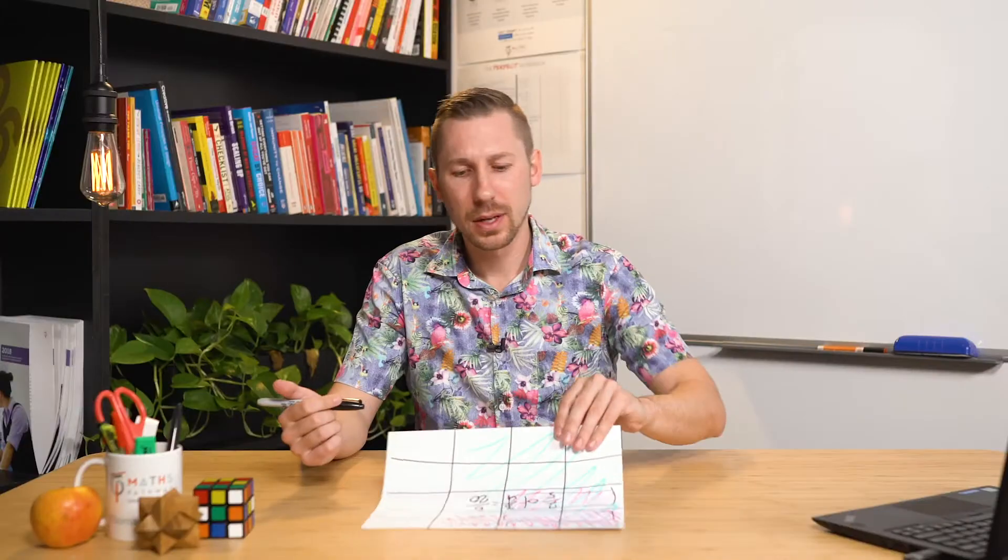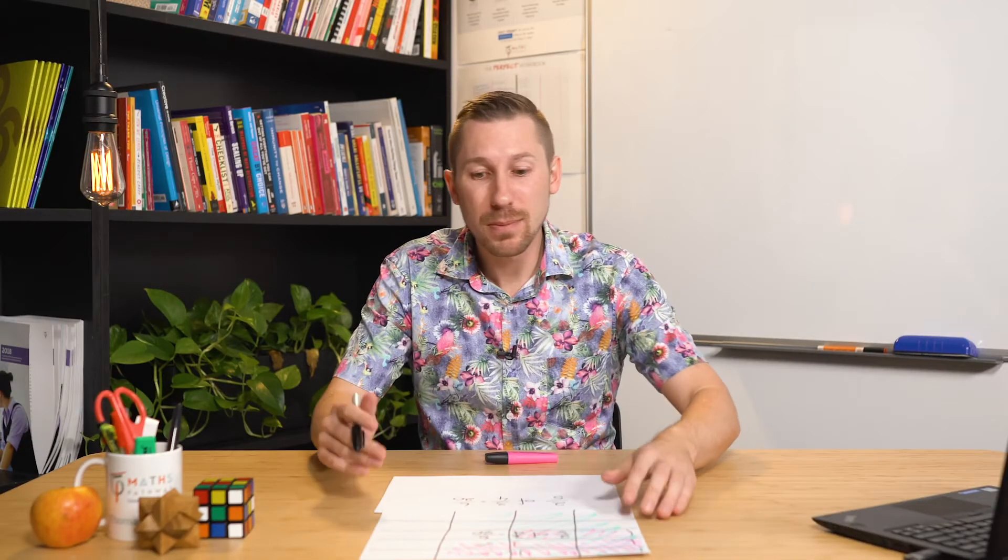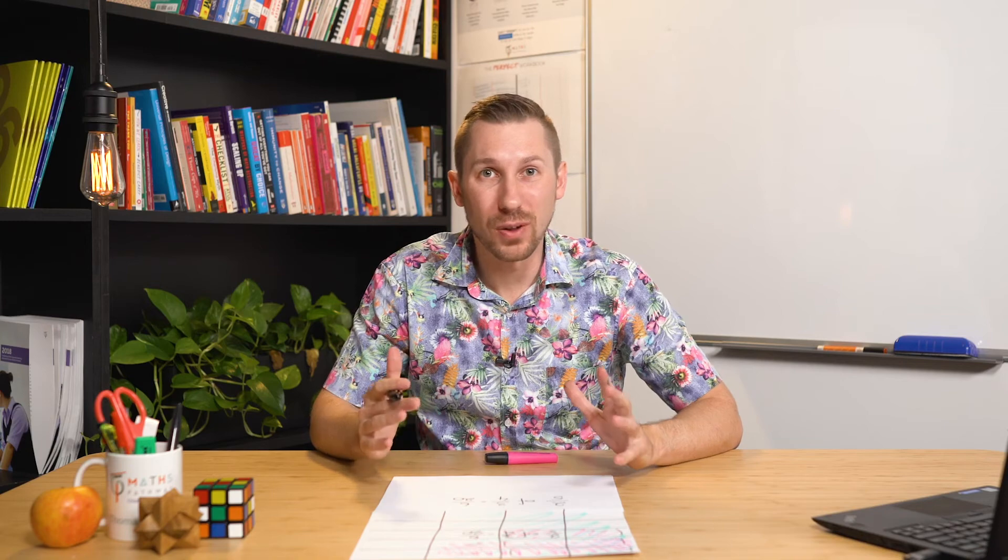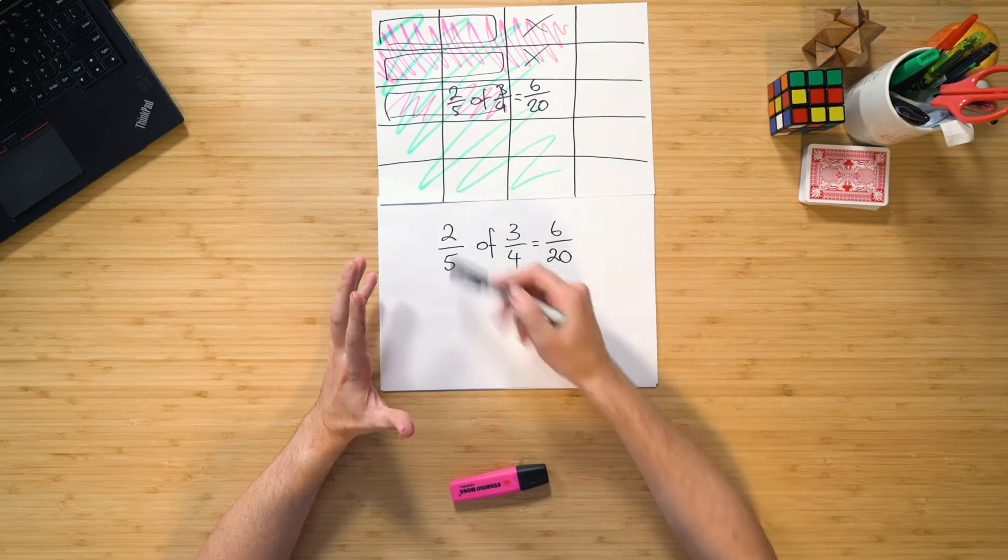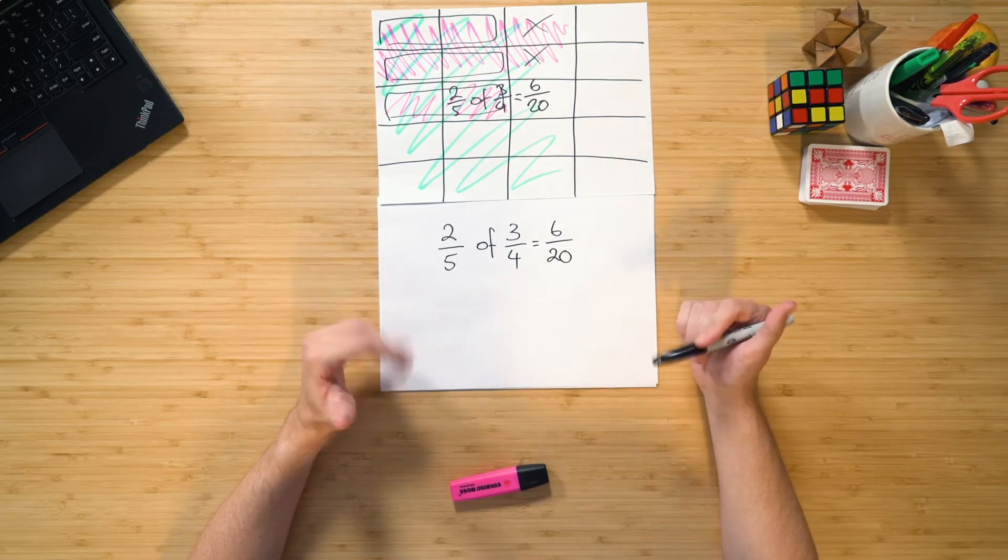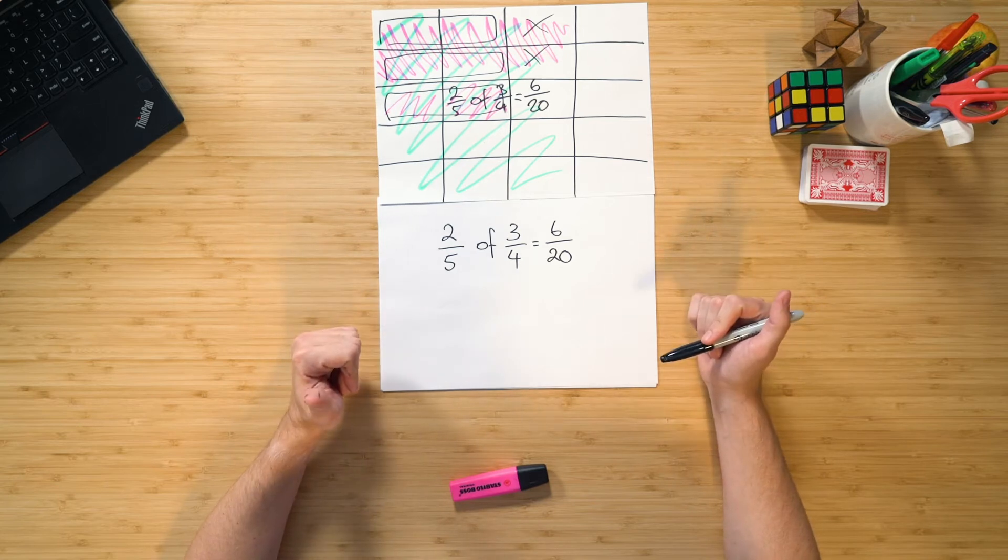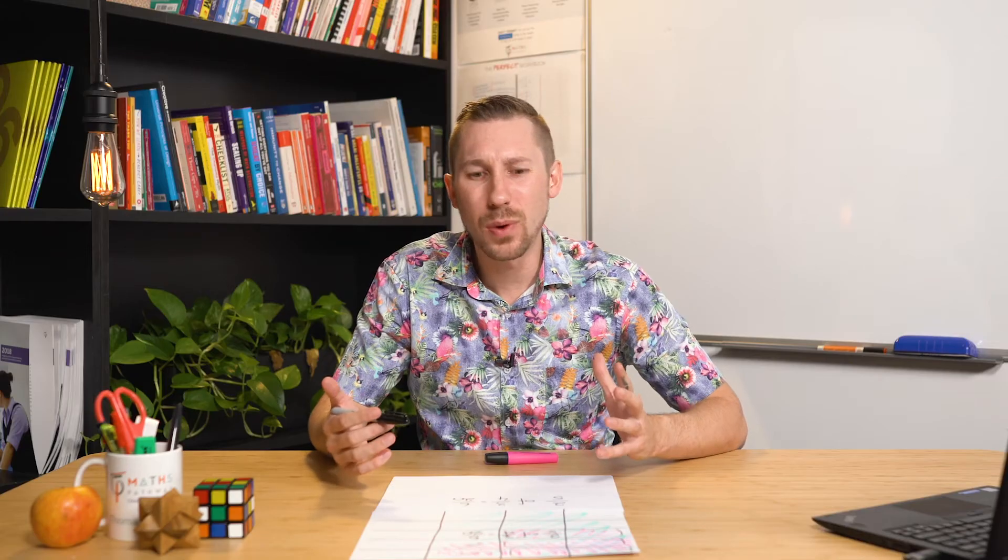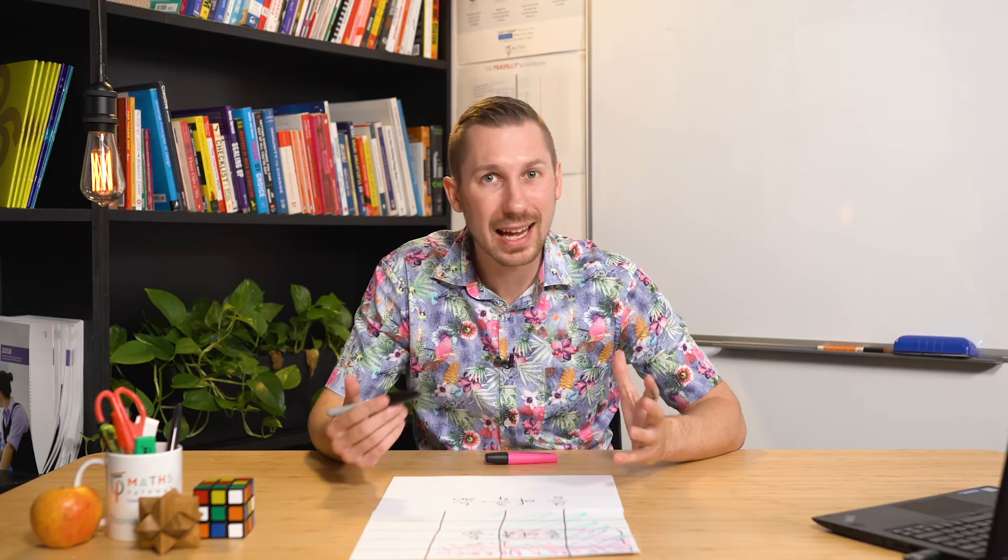And it's worth getting students to go through and do a number of these and use the model when doing so. Once they've done that, get them to come back and have a look at their final answers. That is, you can have them look at the two fifths of three quarters equals six twentieths, for example, and ask them the question, can they see a way where they could simply look at the numbers and come to an answer without possibly needing to use the model?